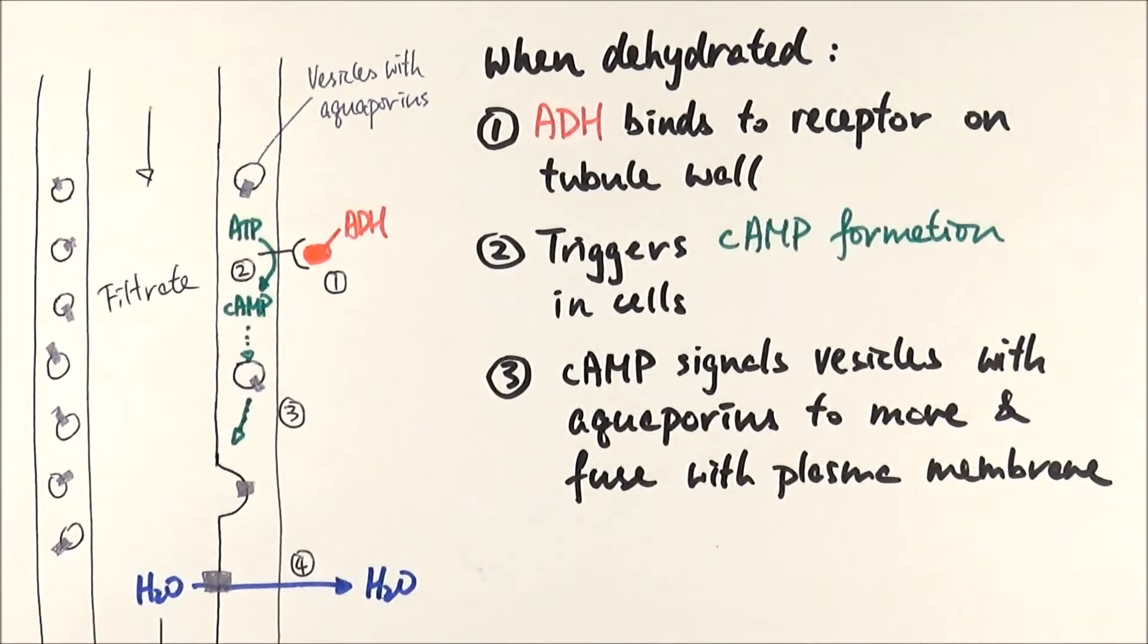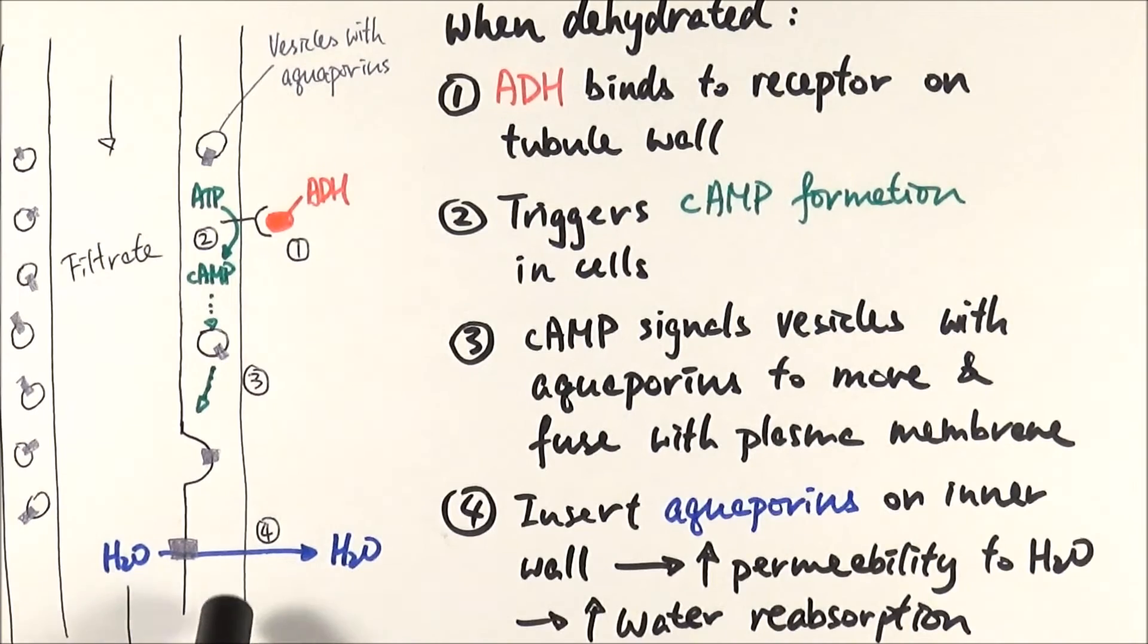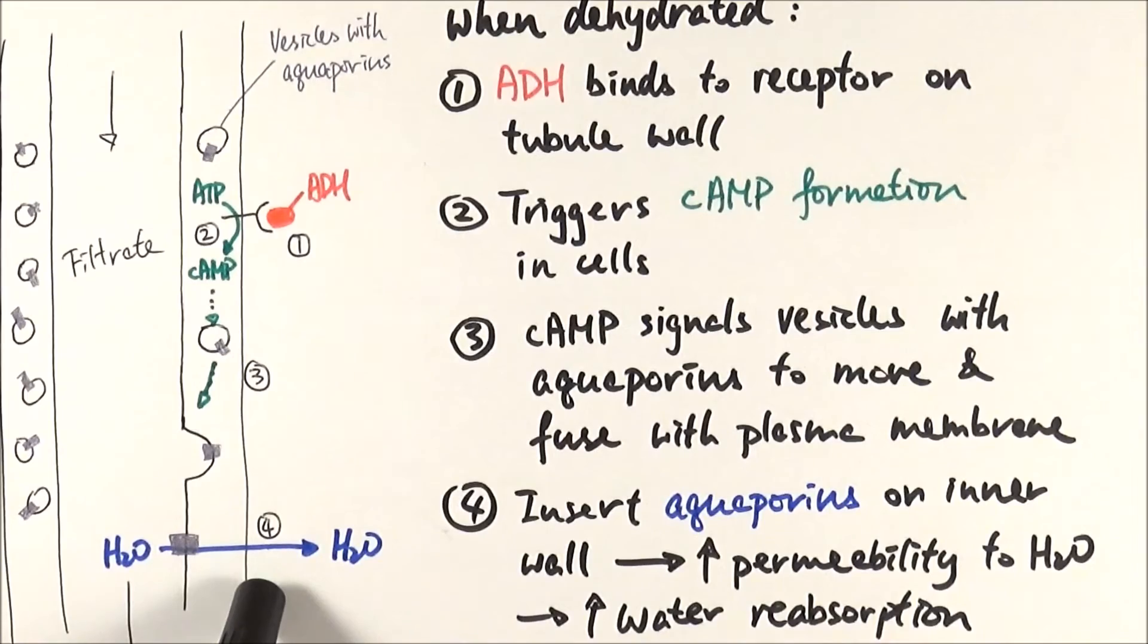And the cyclic AMP signals the vesicles to move and fuse with the plasma membrane, and therefore it inserts more aquaporins on the inner wall, increasing the permeability to water, therefore more water reabsorption can actually occur.